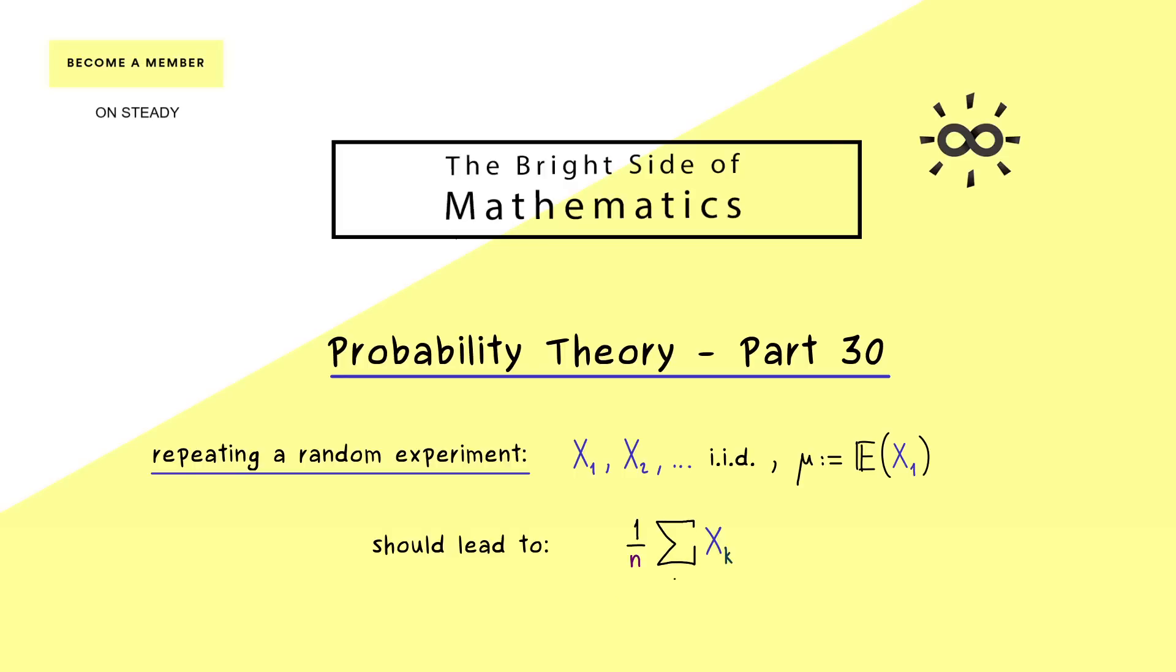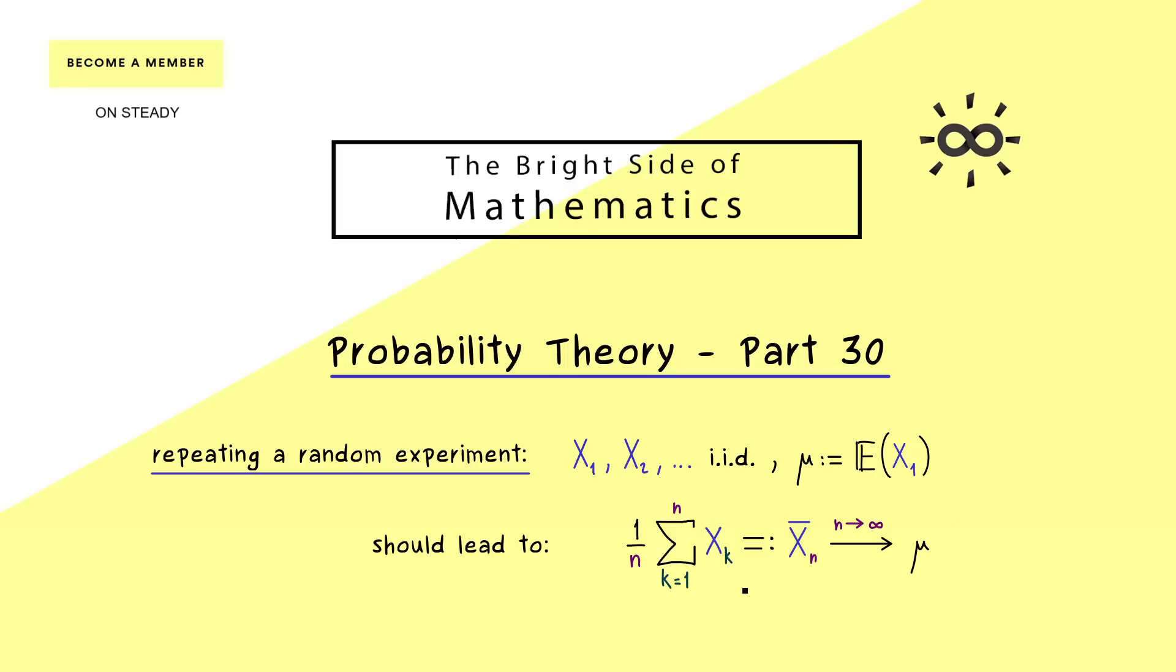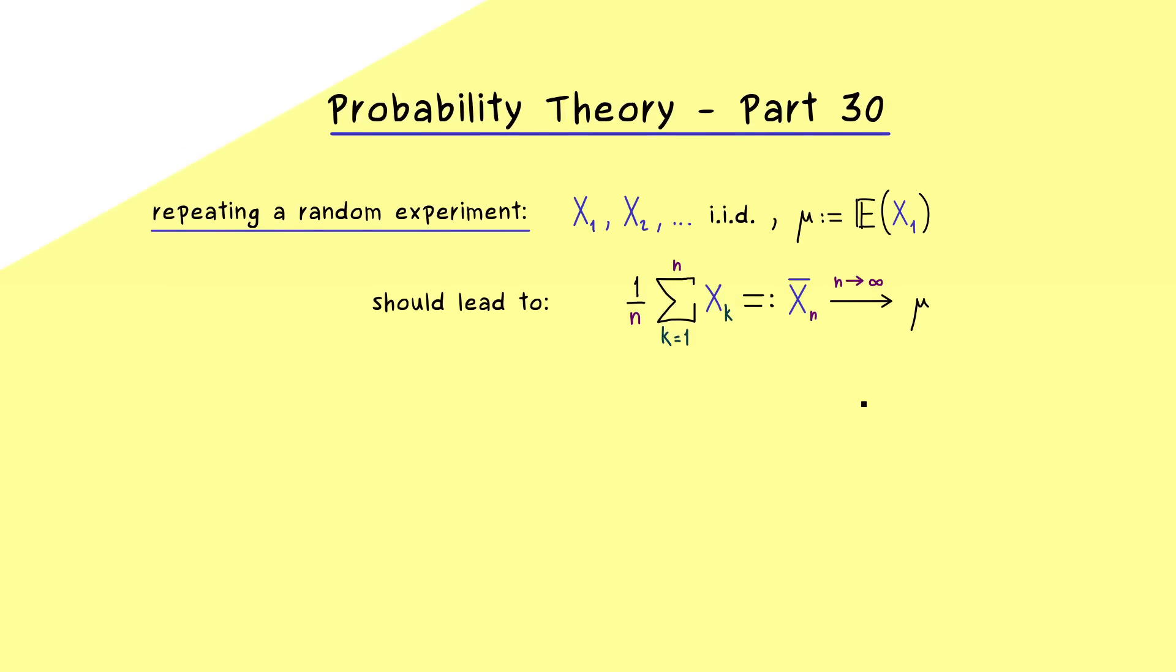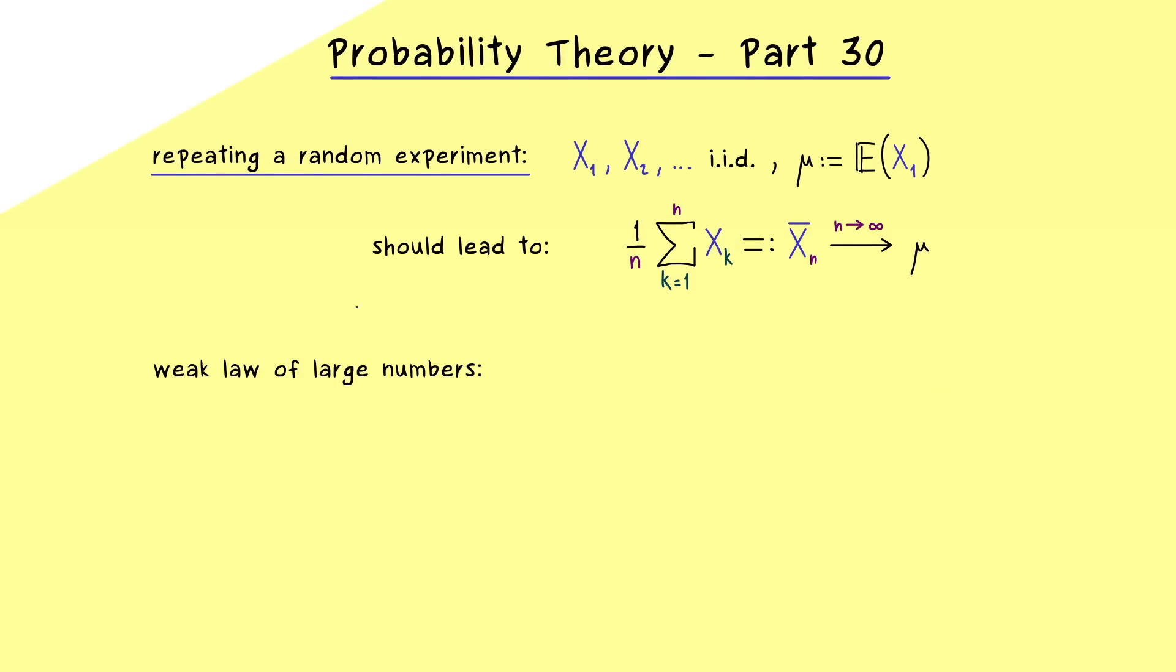It's 1 over n times the sum that goes from k equals 1 to n. And as in the last videos, we denote that by x overline with index n. So now the law of large numbers tells us that this new random variable converges to mu. And what this convergence means for the weak law of large numbers, we have already discussed in part 28. And in this video today, we will discuss a stronger notion of convergence for random variables. And this will also lead us to the stronger version for the law of large numbers.